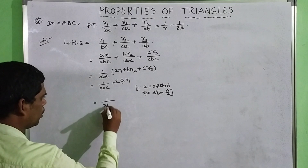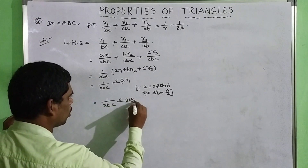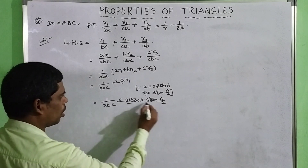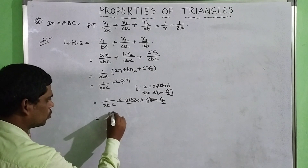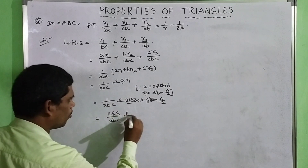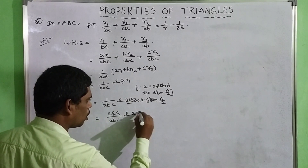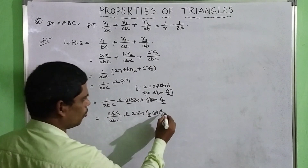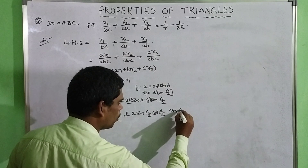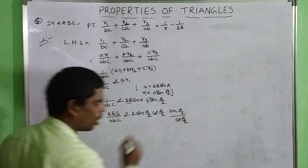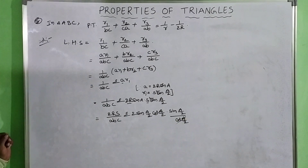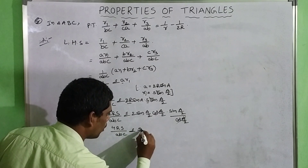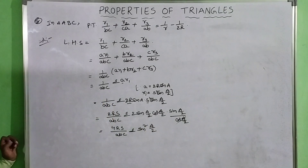Substituting, that equals (1/ABC) × Sigma of 2R·sin A × S·tan(A/2). Here 2R and S are constant terms, so we factor them out to get (2RS/ABC) × Sigma[sin A × tan(A/2)]. Using sin A = 2·sin(A/2)·cos(A/2) and tan(A/2) = sin(A/2)/cos(A/2), the cos(A/2) terms cancel, giving (4RS/ABC) × Sigma[sin²(A/2)].